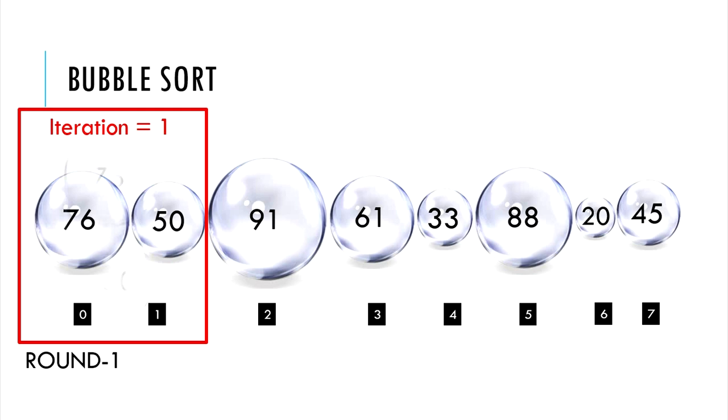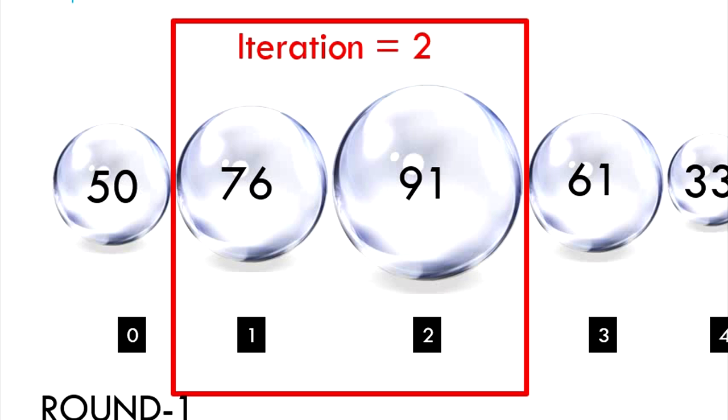Moving on to iteration 2 at round 1. Is the element at index 1 greater than at index 2? No. So no swapping necessary.